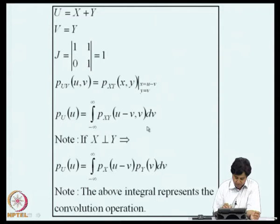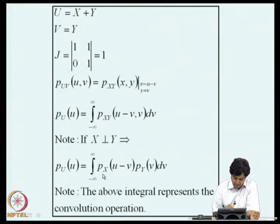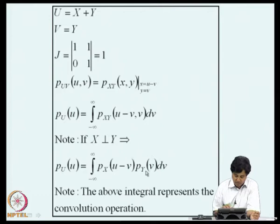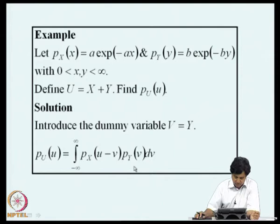If x and y are independent, the joint density can be expressed as the product of the marginals. The integral for P_u(u) becomes the integral of P_x(u-v) times P_y(v) dv. These kinds of integrals are known as convolution integrals and can be solved using transform techniques like Laplace transforms. This type of integral also appears in vibration problems.